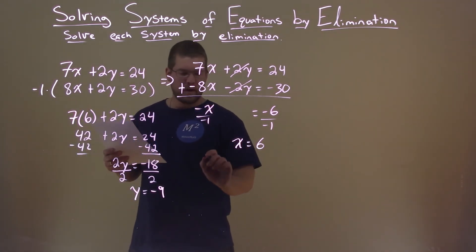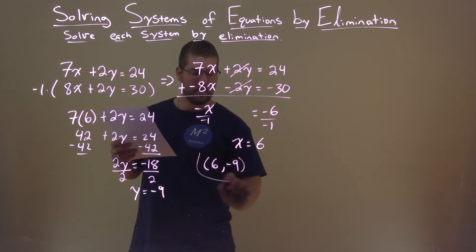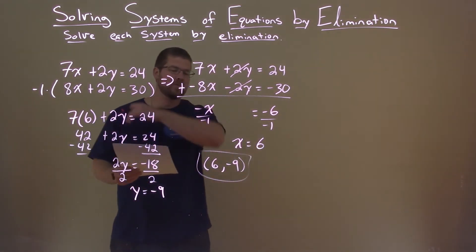We have our x and y values. Let's put it as a coordinate point: (6, -9). There we have our final answer: (6, -9).